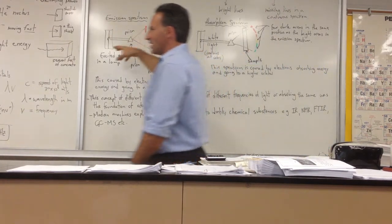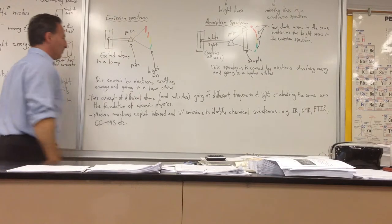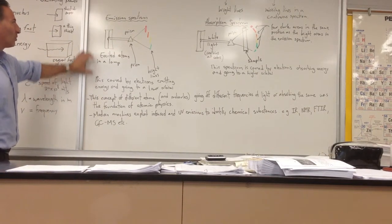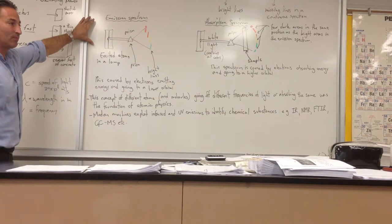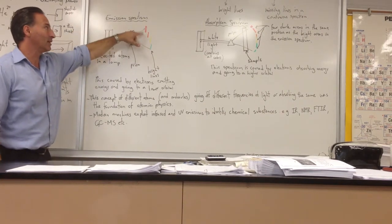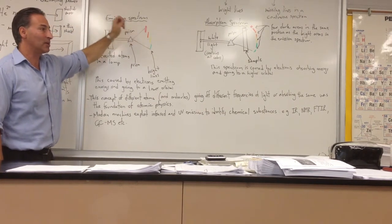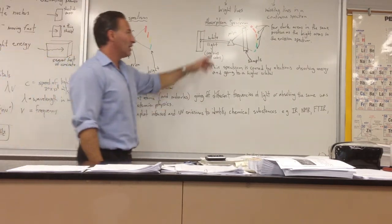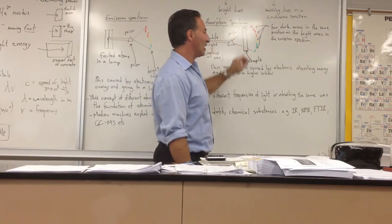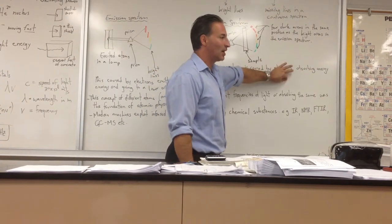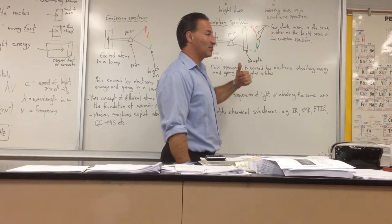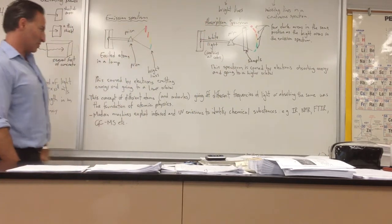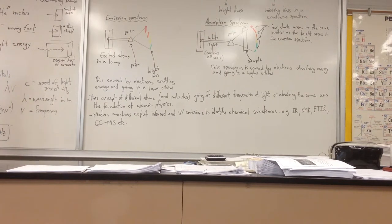So why does this happen? Why do you get emission spectra and absorption spectra? It's caused by electrons emitting energy and going to a lower orbital in the case of an emission spectrum. So if you're giving off a bright light, it's because one of the electrons has jumped from a higher level to a lower level. On the other hand, an absorption spectrum is caused when an electron goes from a lower level to a higher level. So it takes energy to pump the electron up, and that energy is coming from the light. So it absorbs that energy, and that's why you get a dark band.